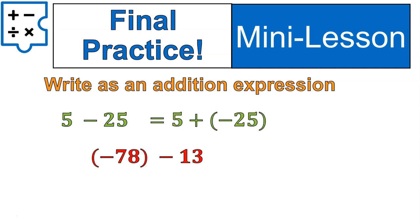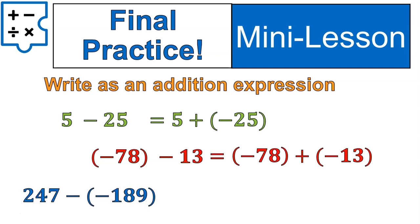How about negative 78 minus 13? That would be negative 78 plus negative 13. For me again that's a helpful one. I like that. 247 minus negative 189. That one we rewrite as 247 plus 189. Definitely a useful expression change.